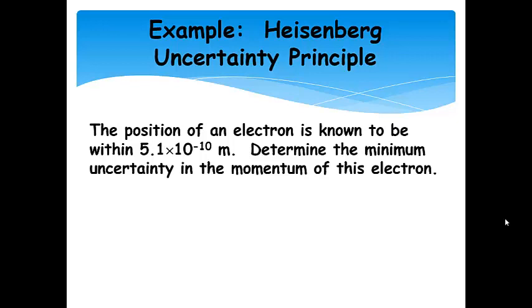Okay, so let's use the Heisenberg Uncertainty Principle in a calculation. Now, this problem tells us that the position of an electron is known to be within 5.1 times 10 to the negative 10 meters. Okay, so that's the little range that the electron can be in. Now, we want to figure out its minimum uncertainty in the momentum. So, pause the presentation and give it a try.